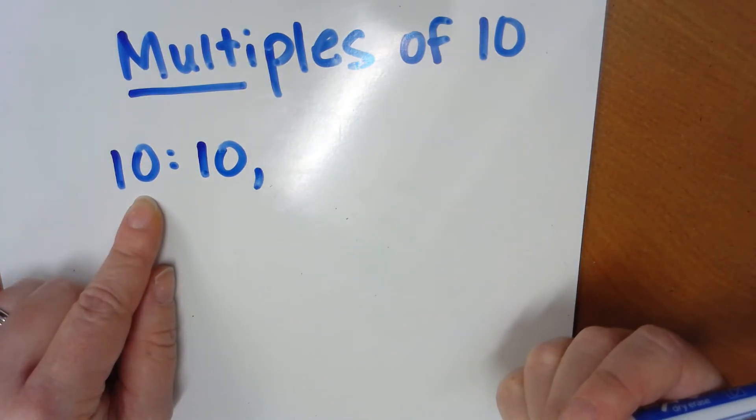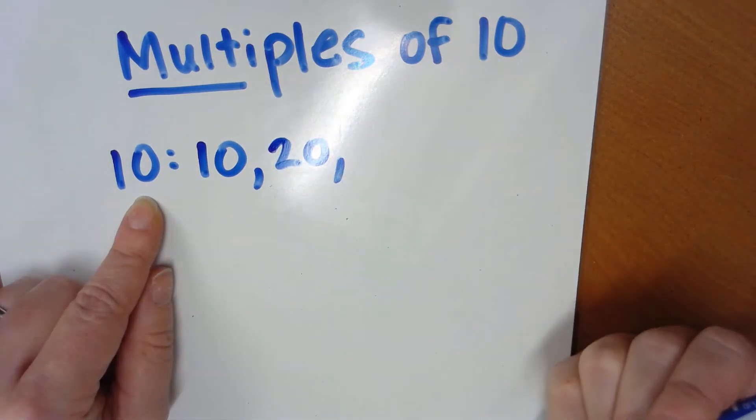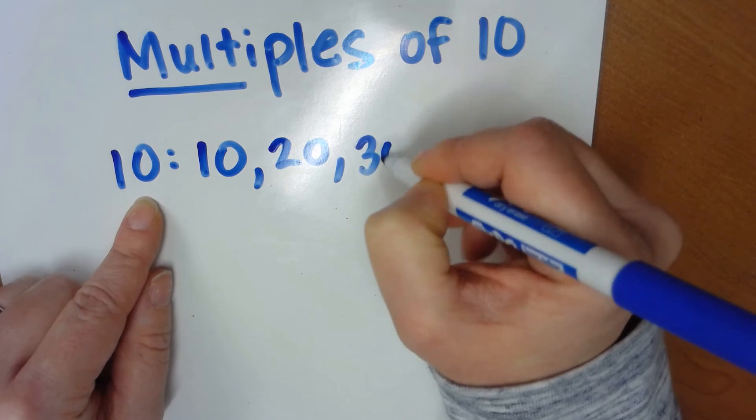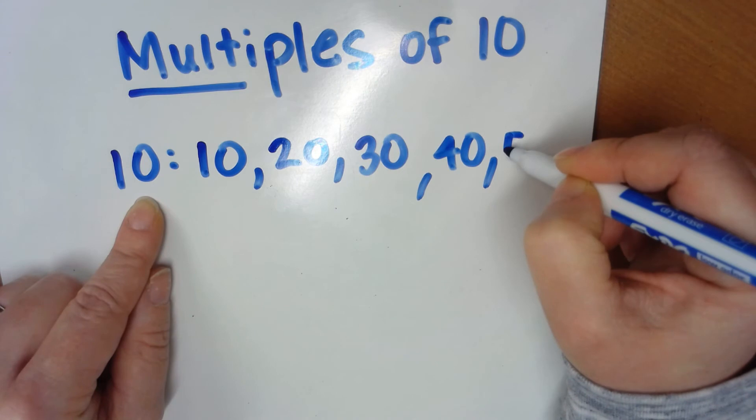Now, I think to myself, what is 2 times 10? 2 times 10 is 20. What is 3 times 10? 30. What is 4 times 10? 40. What is 5 times 10? 50.